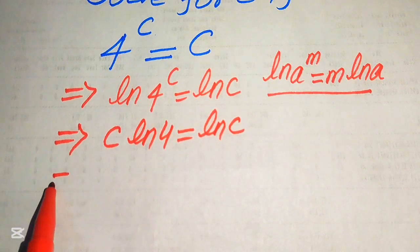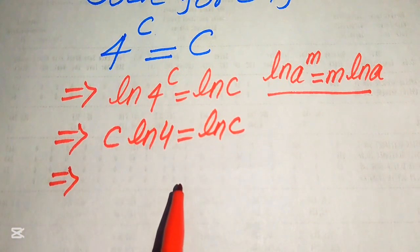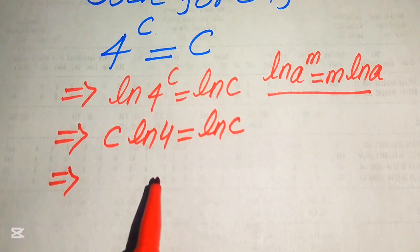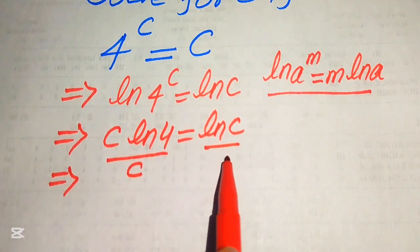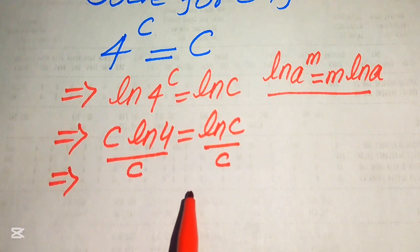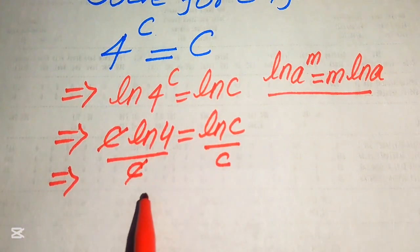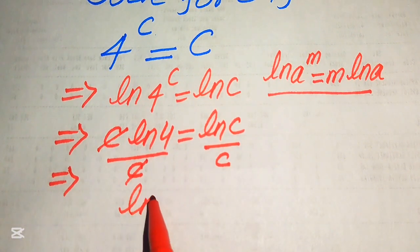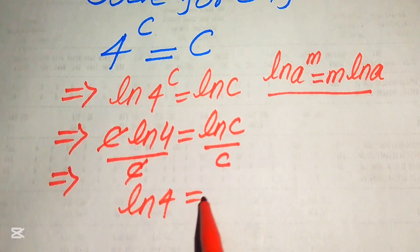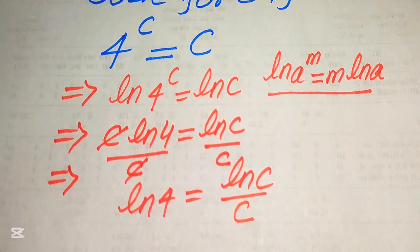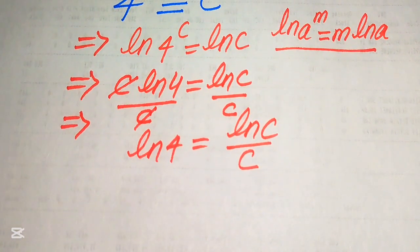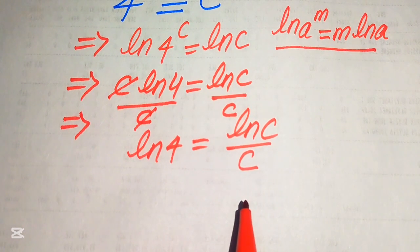In the next step, we move c to the right hand side by dividing both sides by c. This c cancels out with this c, and we get log of 4 is equals to log of c divided by c.